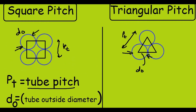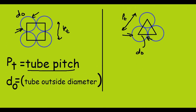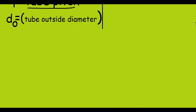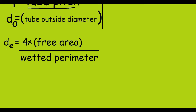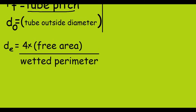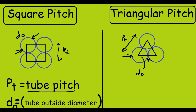The equivalent diameter is given by 4 times the free area divided by the wetted perimeter. We are going to calculate this equivalent diameter for both square pitch and triangular pitch.